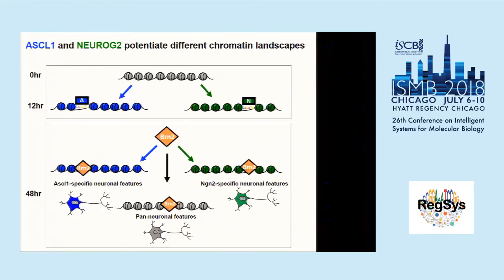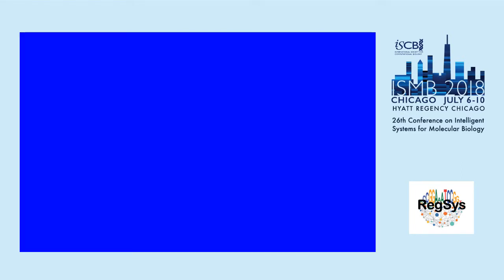Our next speaker is Artur Yarosevich from UCLA, from Jason Ernst's lab, and he'll be talking about fine mapping of chromatin interactions.